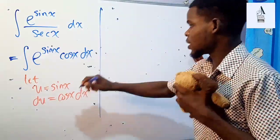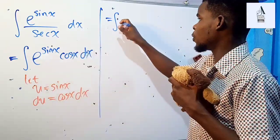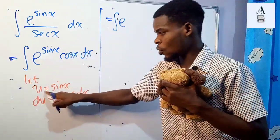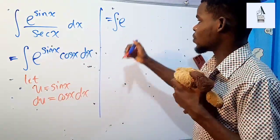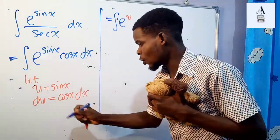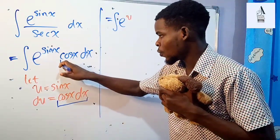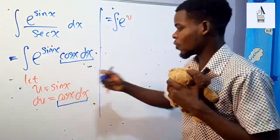Okay, so given that, that means that this integral will become the integral of e raised to the power of... Now sine x, we've just called sine x u, right? So in place of sine x, I'm just going to put in u. And then you notice that the whole of this cosine of x dx, which we now call du, is over here. So we can just replace the whole of that with the du.